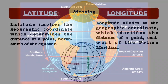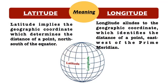So let's move to the difference. The first difference is in the meaning. Latitude implies the geographic coordinates which gives us the distance of the point north and south of the equator. On the other hand, longitude implies the geographic coordinates that identify the distance of a point east or west of the prime meridian.